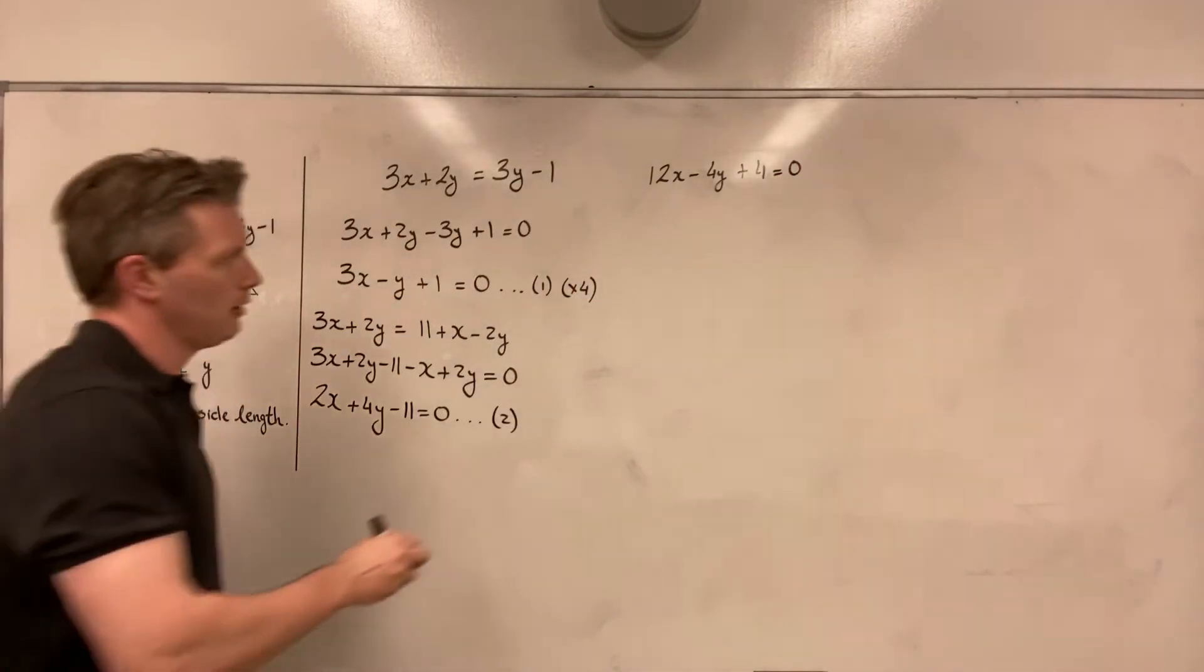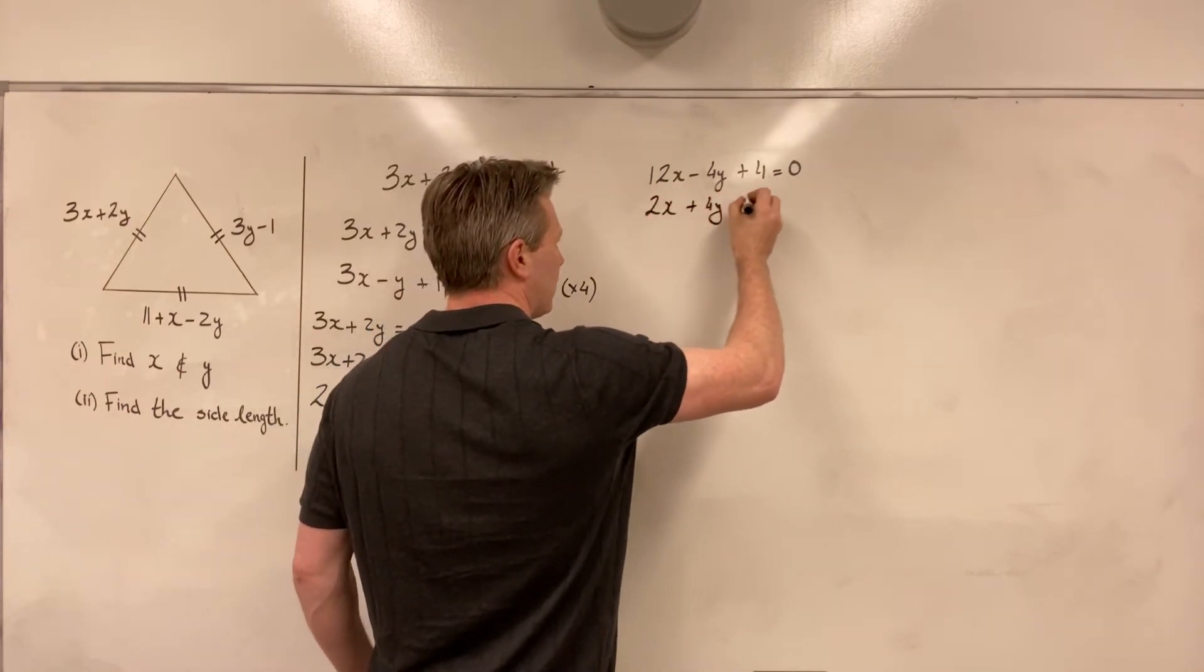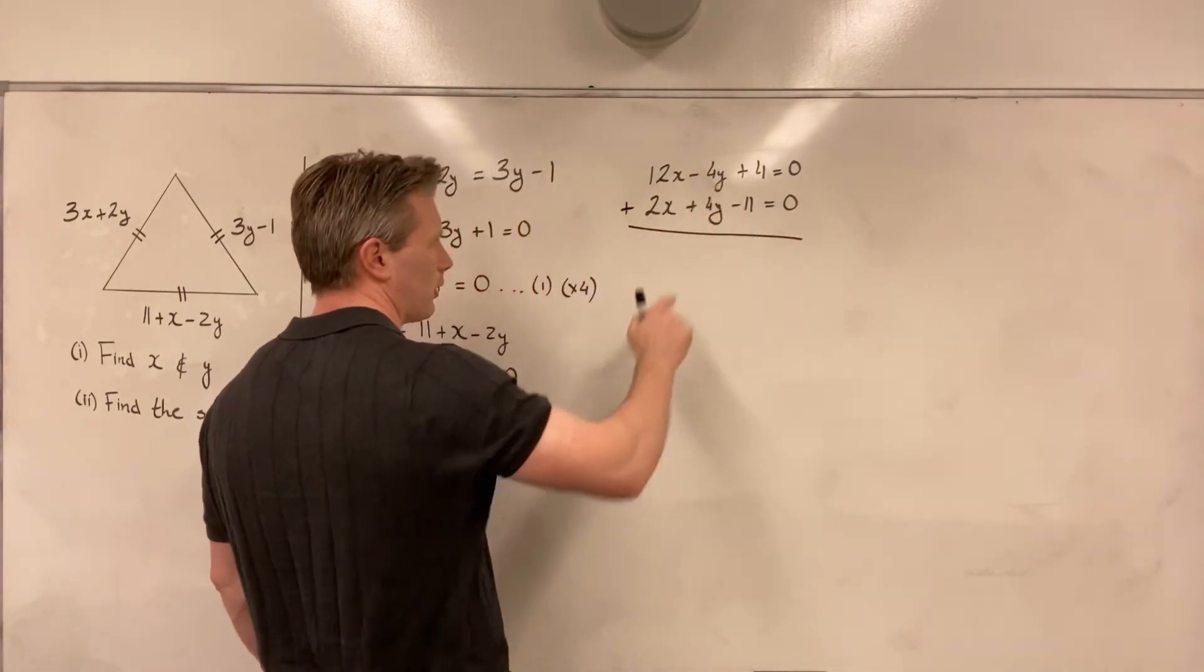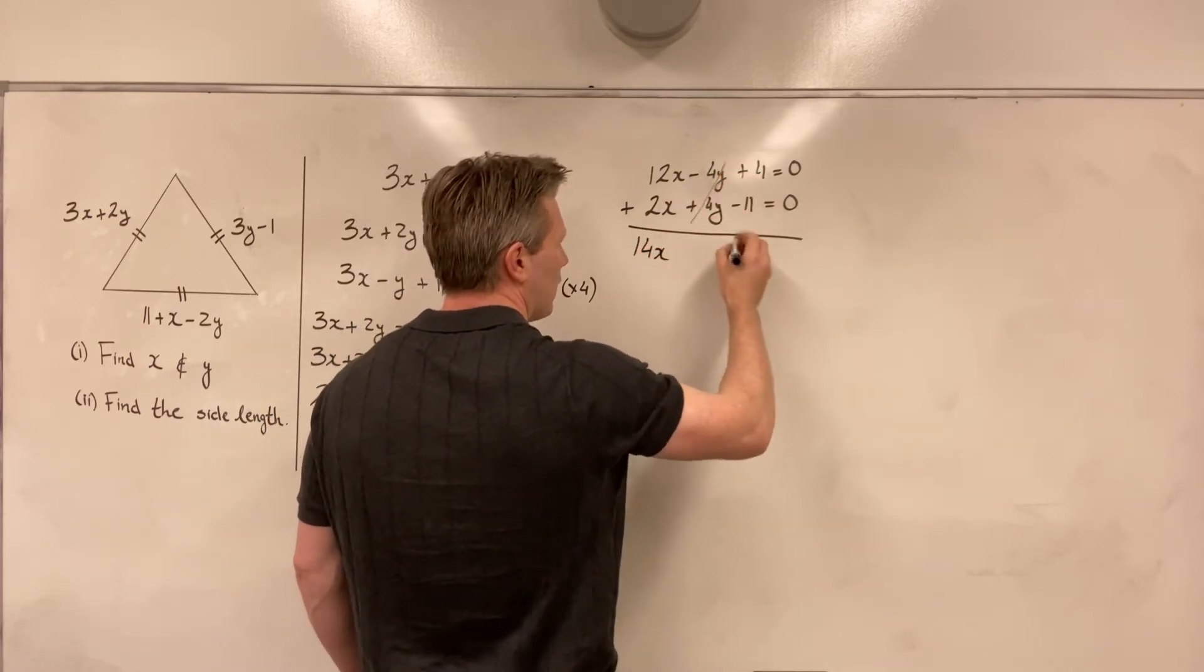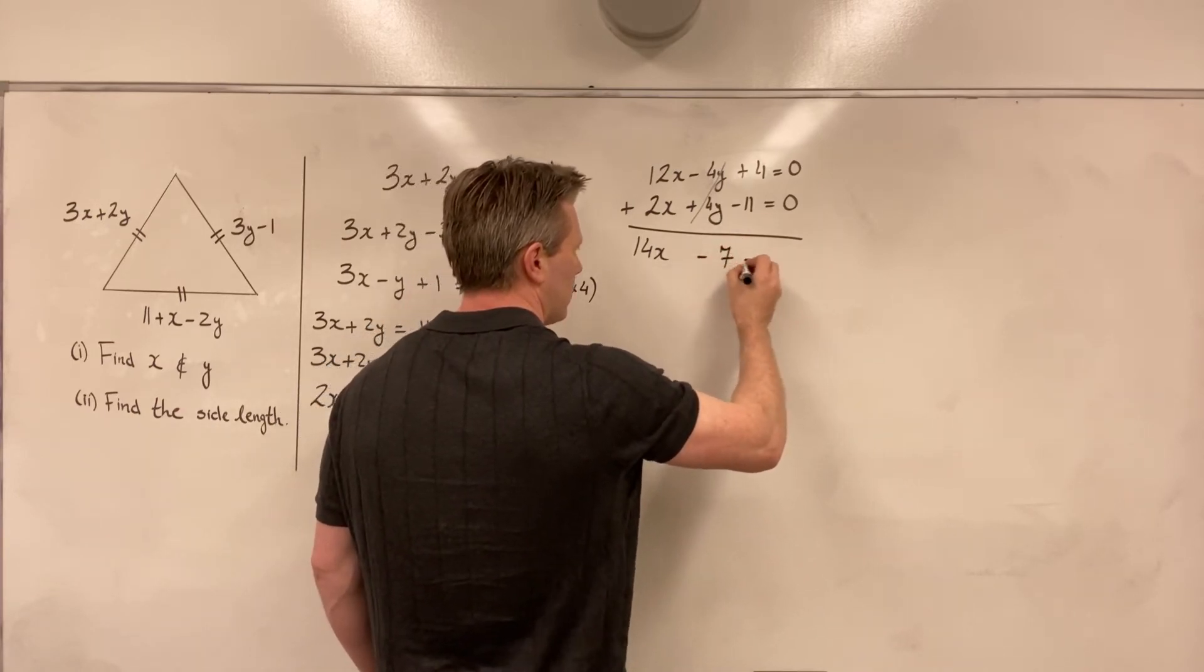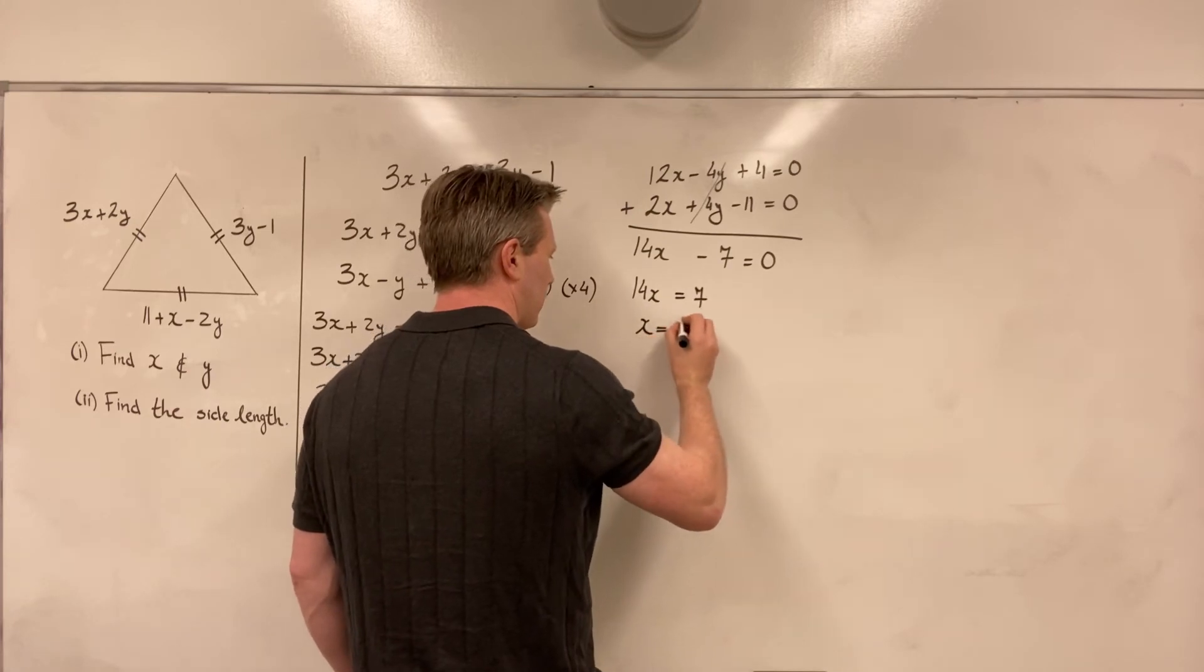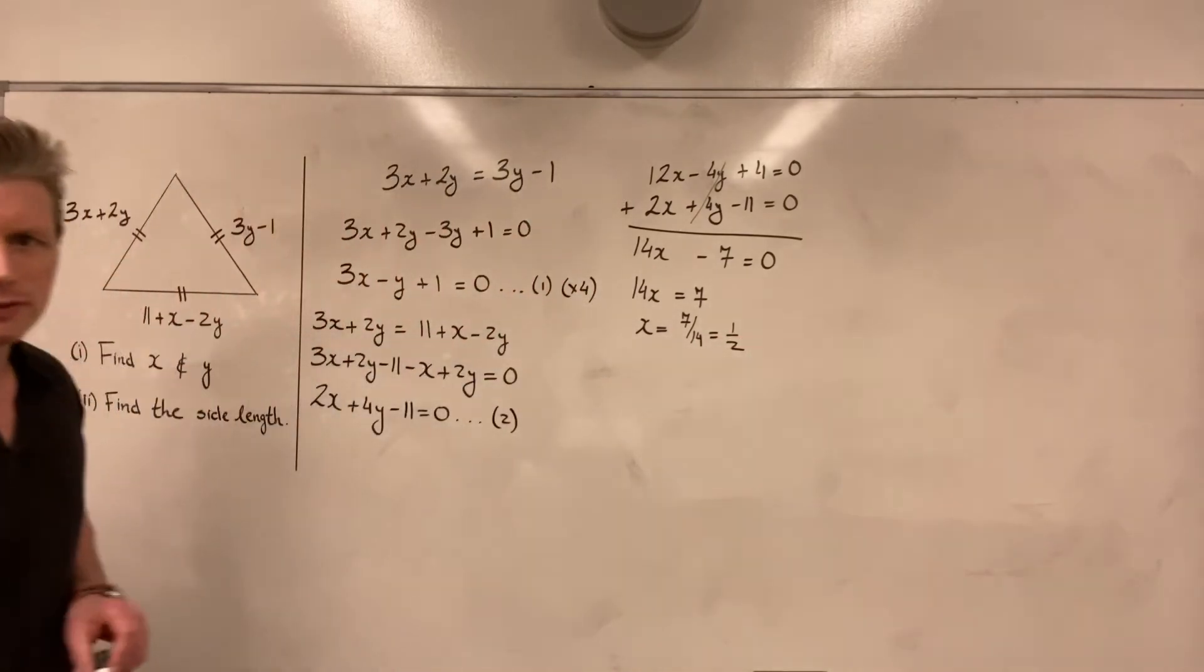This equation, I'll put underneath, is 2x plus 4y minus 11 is equal to 0. And now, if I add my two equations together, my y terms will cancel. 12x plus 2x is 14x. My y's will go away. 4 minus 11 is minus 7 is equal to 0. 14x minus 7 is equal to 0. Adding 7 to both sides, 14x is equal to 7. Therefore, x is equal to 7 divided by 14, which is 1 over 2. And so I find that x is equal to 1 half.